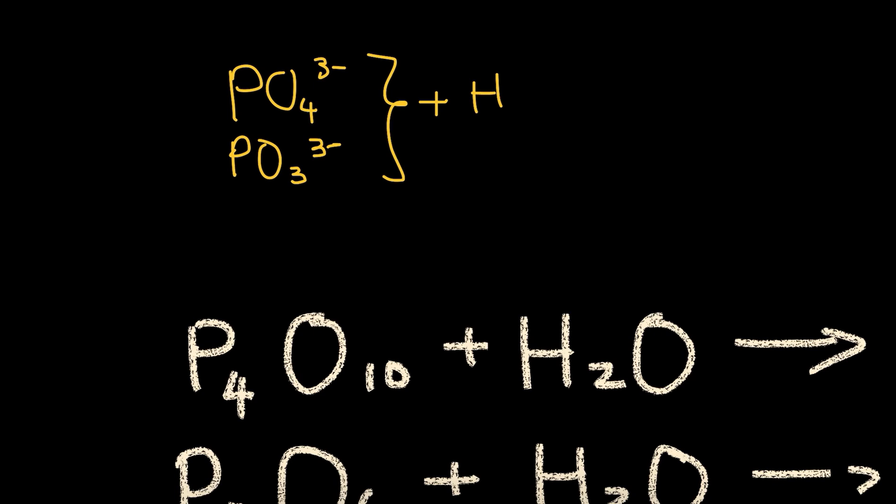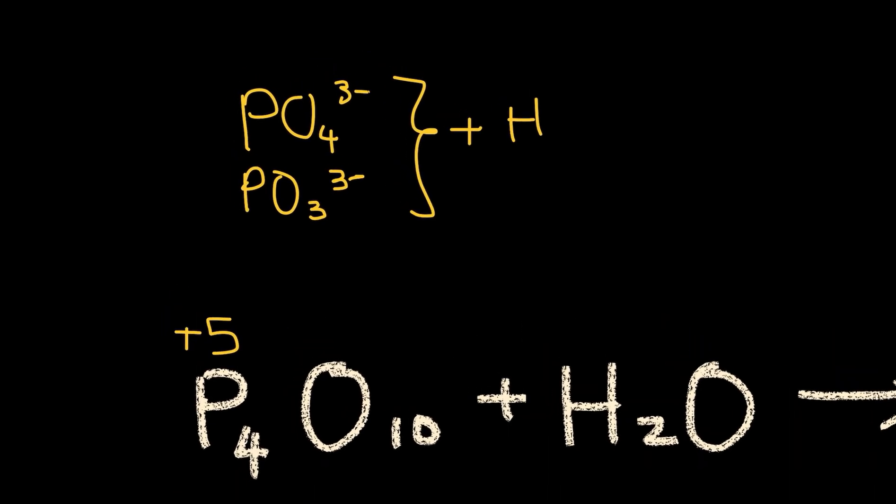Then we must look at oxidation numbers. The oxidation number on this P4O10 is plus 5 because oxygen is minus 2 times 10, so that will give negative 20. You must have a positive 5 times 4 to balance it out in order to have a net neutral charge. If the phosphorus here has a positive charge of 5, we'd have to look for a phosphorus here in our oxyanions.